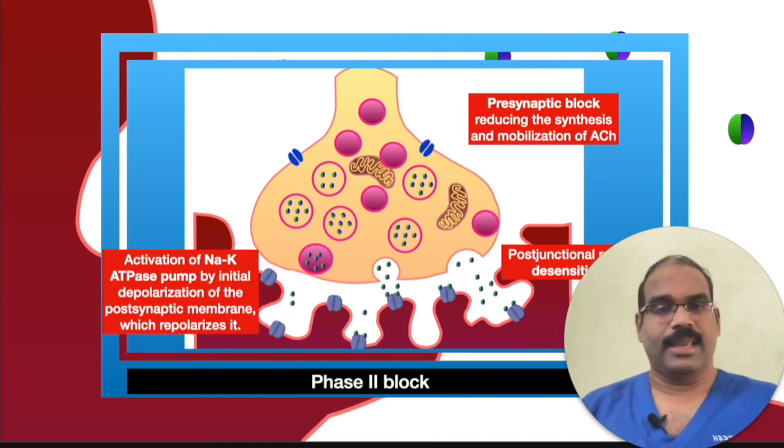Inhalation anesthetic drugs accelerate the onset of phase two block. Acetylcholine esterase drugs can be used to antagonize it, but the response is difficult to predict. Therefore, it is advisable to allow spontaneous recovery.